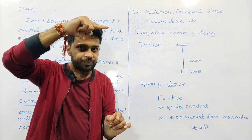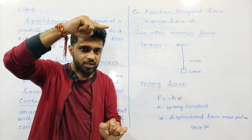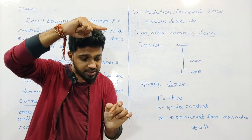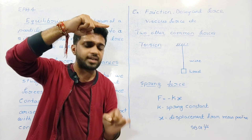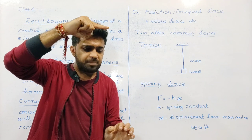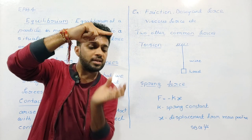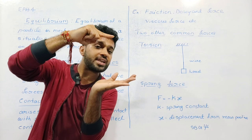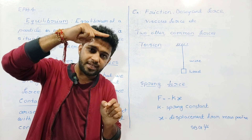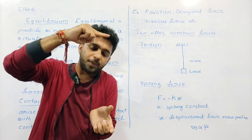When the spring is stretched from its mean position, there is a displacement x from the mean position — the length increases. When compressed, the length decreases by x. The spring tries to regain its original size and shape from both stretch and compress positions.